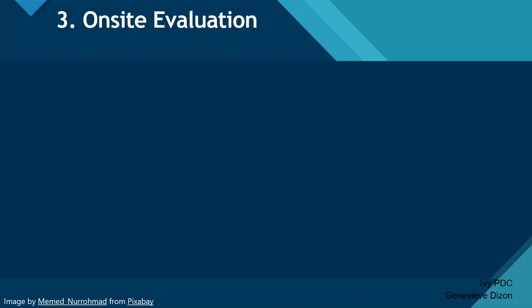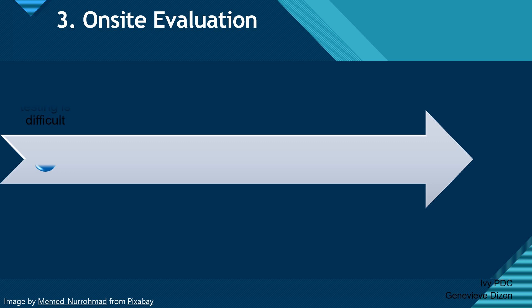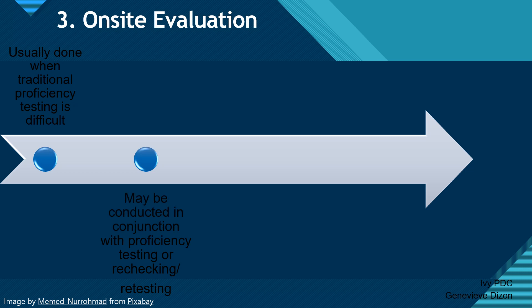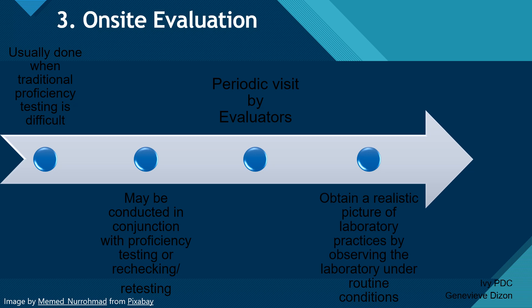The third type of EQA is on-site evaluation. This is usually done when the first two types cannot be done or are difficult to perform, and it may also be conducted together with proficiency testing or rechecking and retesting. It is done through periodic visits by evaluators to the laboratory. The advantage is that it obtains a realistic picture of laboratory practices by observing the laboratory under routine conditions to check that it is meeting its quality requirements.